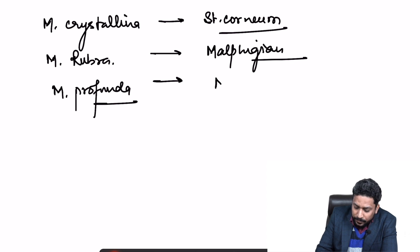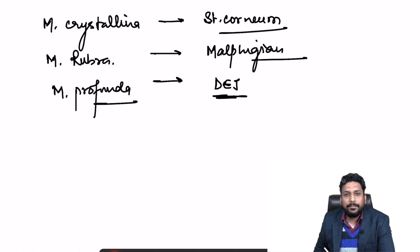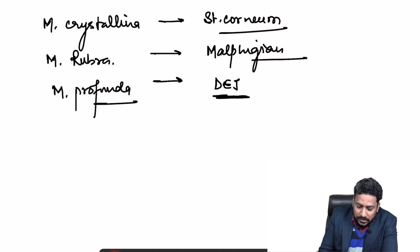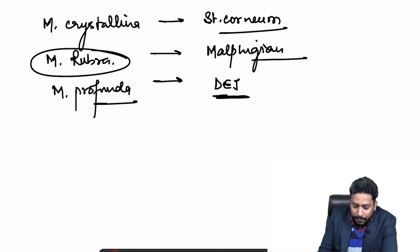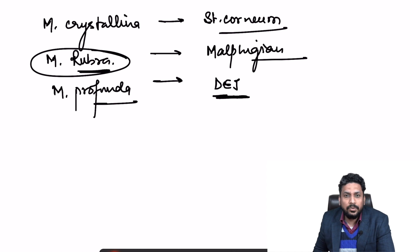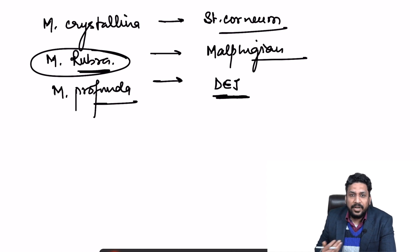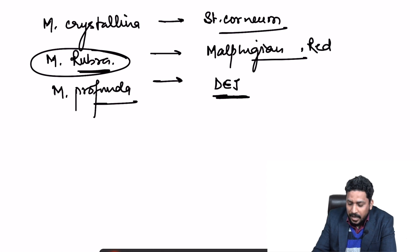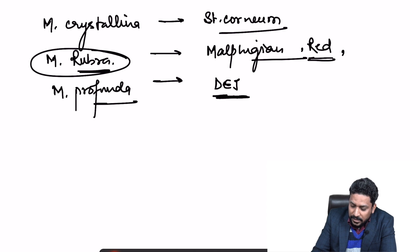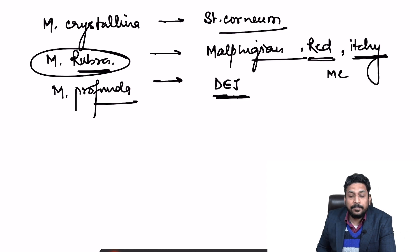In miliaria rubra — as the name suggests — there is spillage of sweat due to the blockage, which leads to inflammation. That is why these lesions appear red in color. There is inflammation, and many times these are itchy lesions. Miliaria rubra is considered the most common type of miliaria.